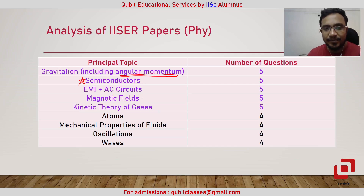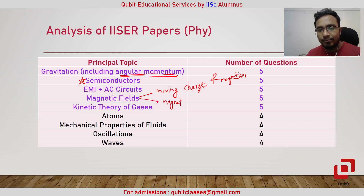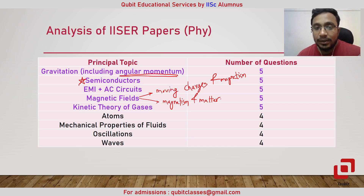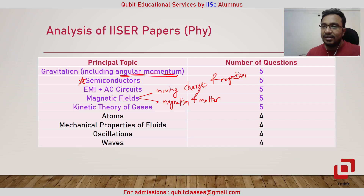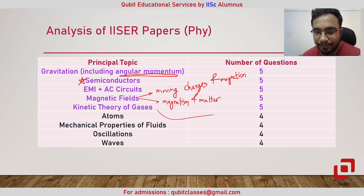Magnetic fields covers two chapters: the first is moving charges and magnetism — in some books called magnetic fields due to electric current — and the second is magnetism and matter, which mainly contains para-, ferro-, and diamagnetism and the similarities between a current-carrying loop and a bar magnet. Kinetic theory of gases is another simple topic connected to thermodynamics; sometimes they connect these two items. Five questions have been asked on them.